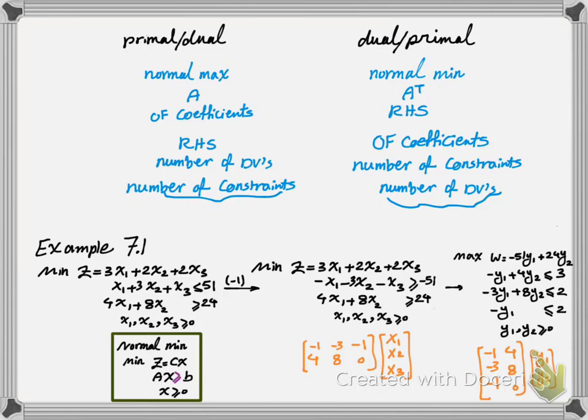At the end don't forget to write that y1 and y2 are greater than or equal to 0. So with this you are done with writing your dual programming from your initial linear programming problem by normalization of the primal. Here we learned how to normalize a problem and from a normalized problem write its normalized dual.